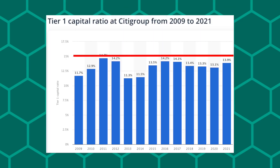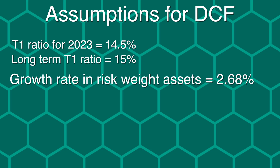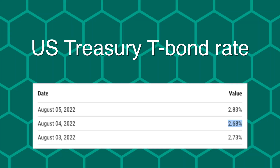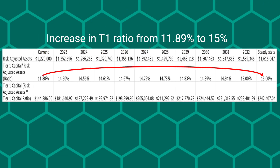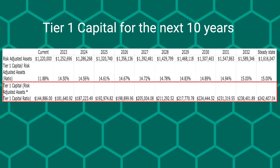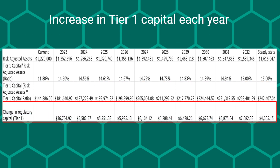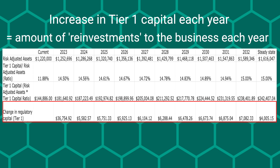As for the long-term Tier 1 Capital Ratio target, I have set it to be 15%, which although is higher than it's ever been since the financial crisis, doesn't seem unreasonable for Citigroup as it is one of the largest banks in the world and therefore will be under greater scrutiny. As for their risk-weighted assets, I have assumed they will grow at the same rate as the US economy — around 2.68%, based on the latest US Treasury 10-year T-Bond Rate. These assumptions allow me to estimate the Tier 1 Capital needed over the next 10 years, where the annual increase represents the capital the bank must invest to maintain its operations.